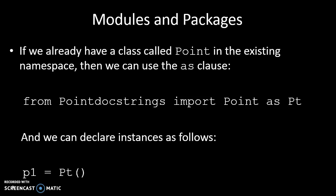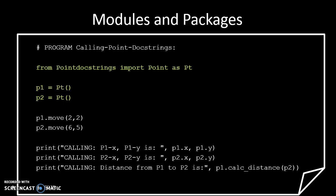And just in case there's already a class called Point in our existing namespace, then we can use the as clause to change the name of the imported one to something different. So if we say from Pointdocstrings import Point as Pt, then we can declare instances of that using Pt(). And that's how it looks in code. That's really handy and effective because it doesn't really change anything except the calling.